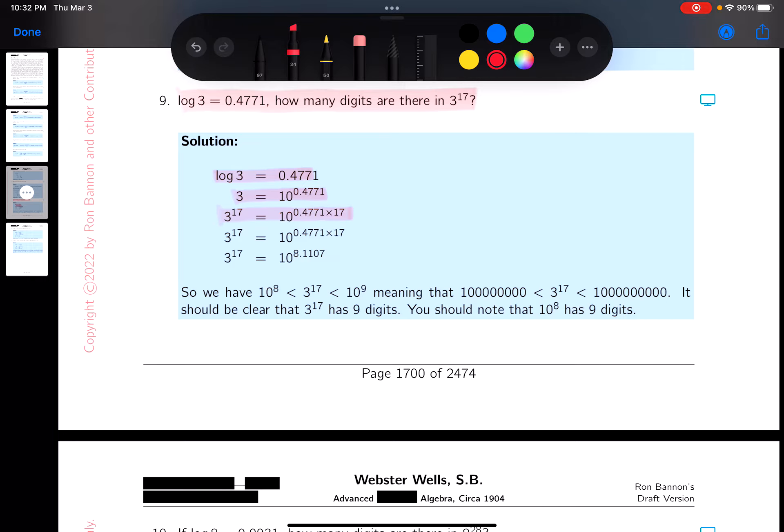Now, of course, I'll be honest with you. I did need to multiply this out. I did need to multiply that out, by the way. And someone says, why is that? Well, if you look at that, 3 to the 17th is equal to 10 to the 8.1107. Now, maybe I didn't need to multiply that to that level of accuracy, but I did need to multiply it out.